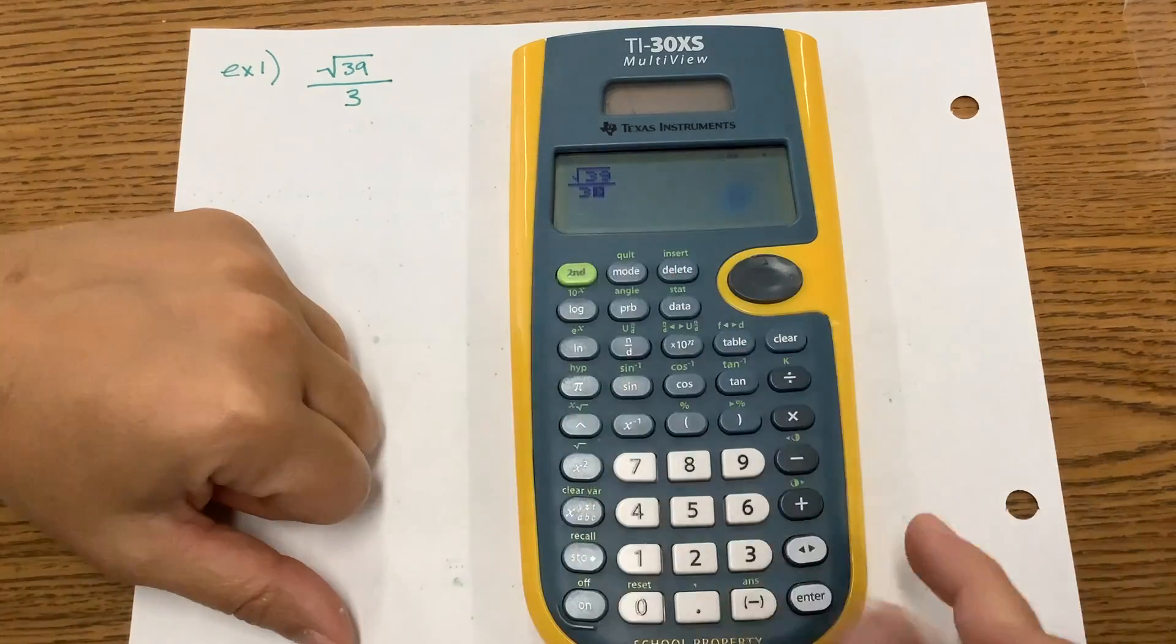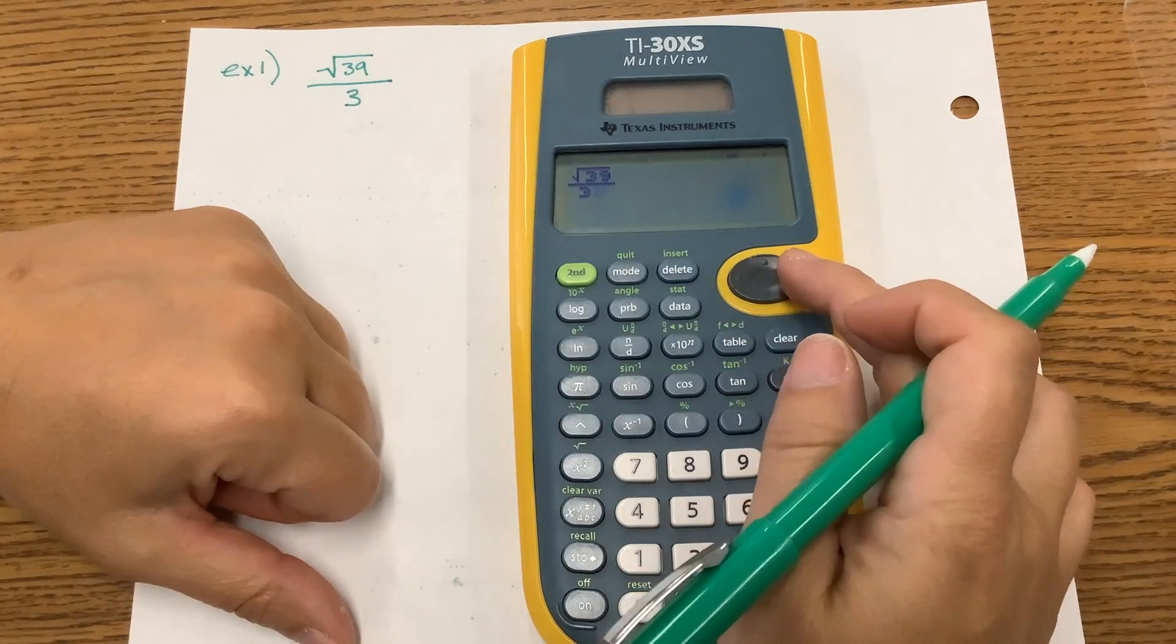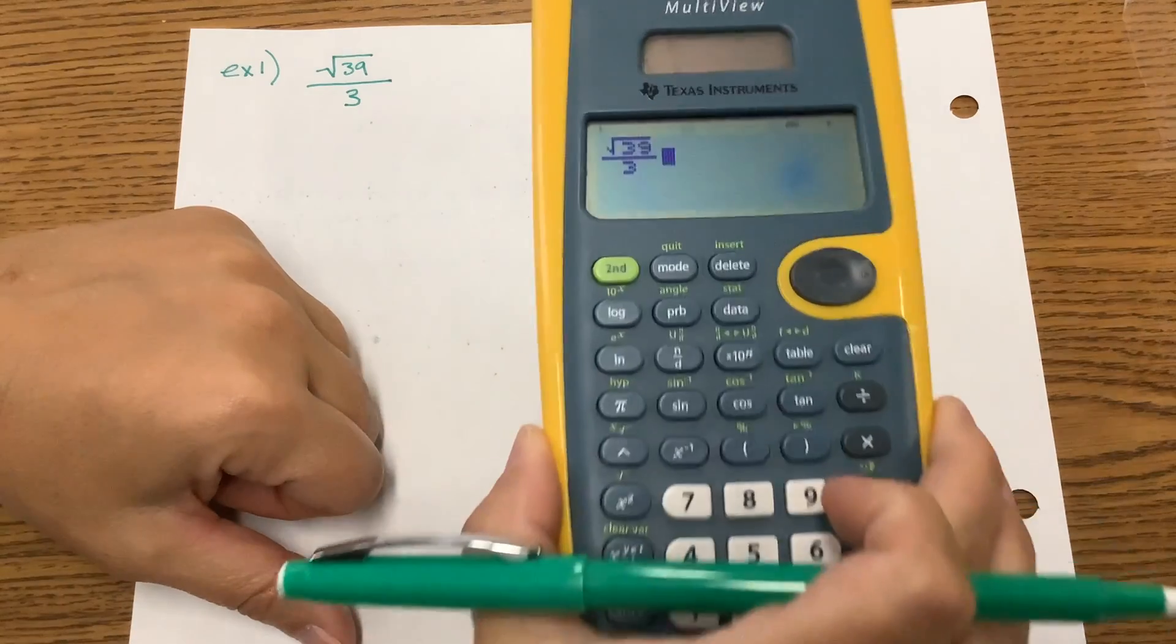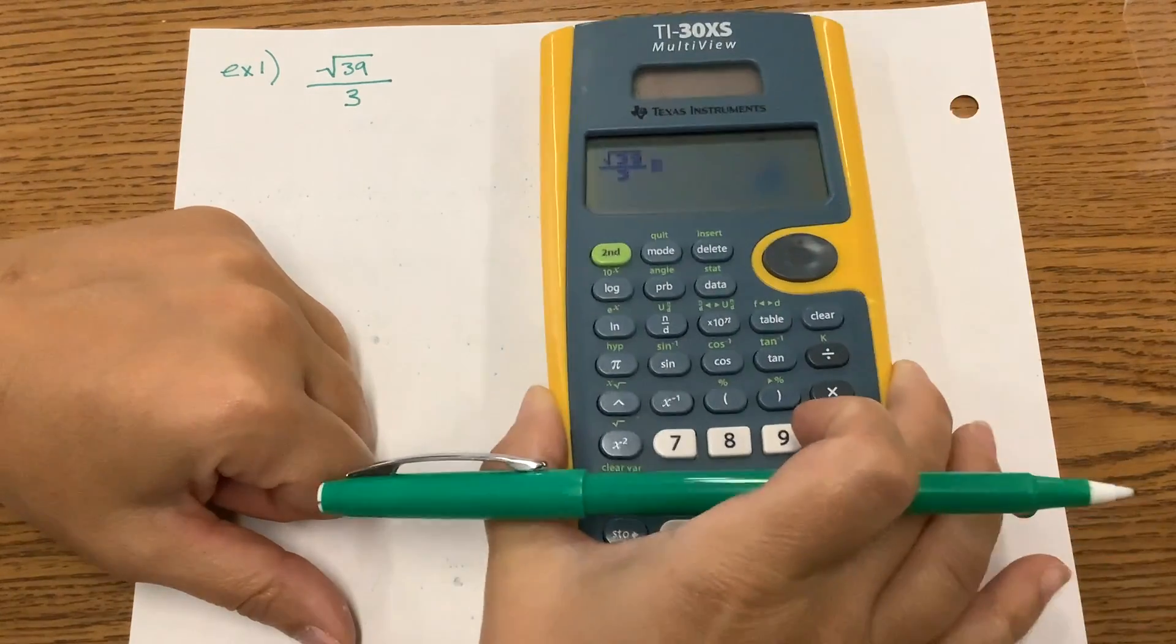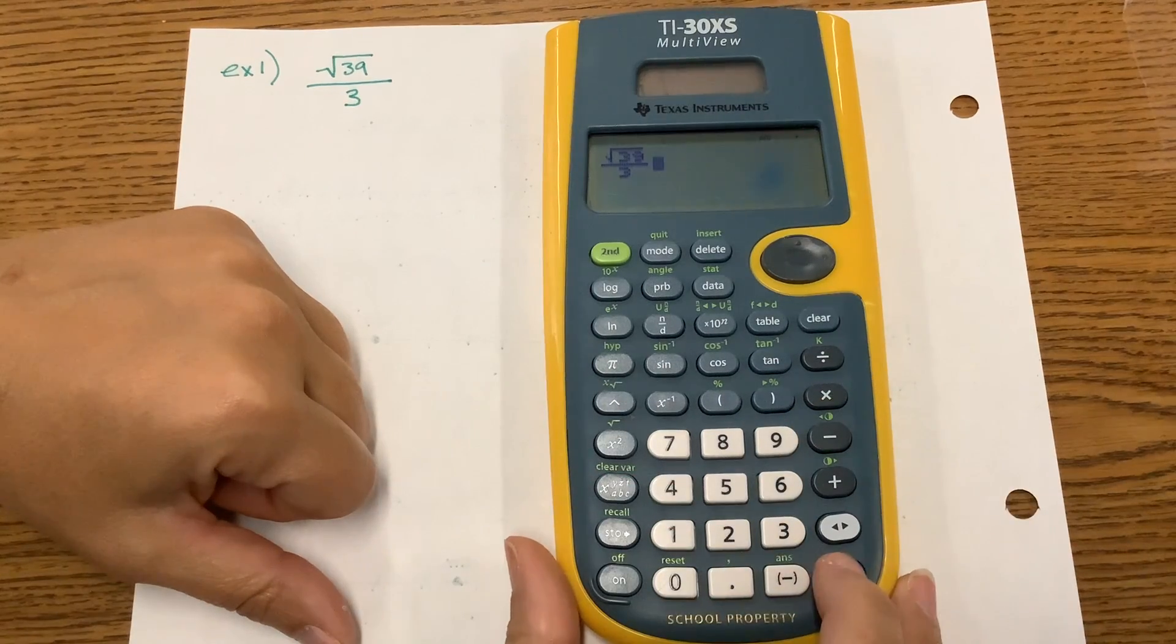To come out of this to make sure your fraction looks correct, just press the button sideways, and you see we have the square root of 39 over 3. To evaluate that, you would press enter.